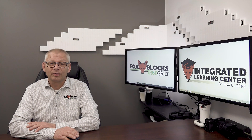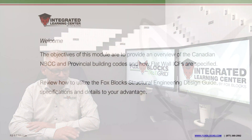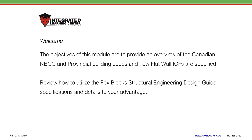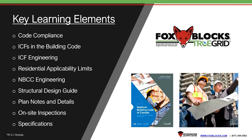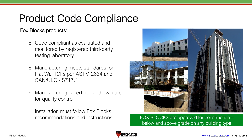You're gathering information to get your building permit for your project — that's what this module is going to help you with: knowing the building code, the National Building Code of Canada. The objectives we're going to cover include an overview of the National Building Code of Canada, some provincial codes, how flat wall ICFs are specified, the FoxBlock structural engineering design guide, code compliance for ICFs, engineering residential applicability limits, the structural design guide, plan notes and details, on-site inspections, and specifications.